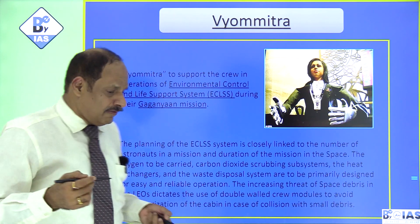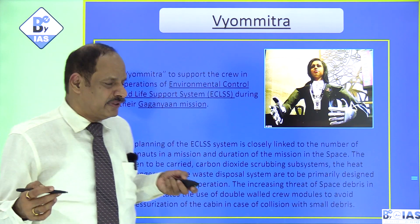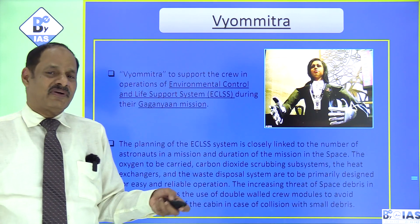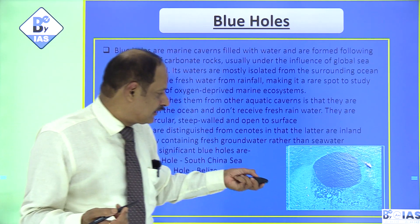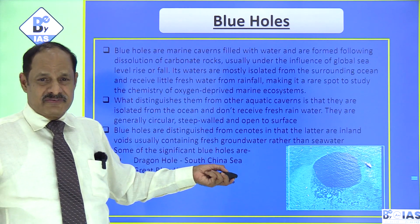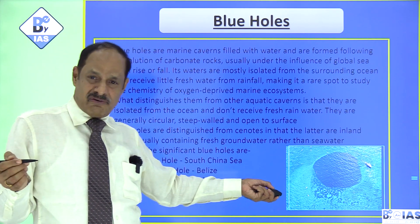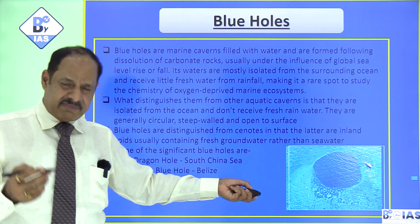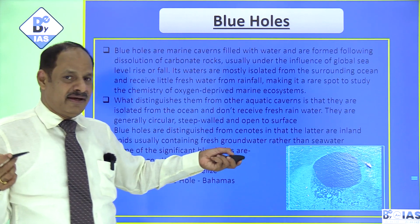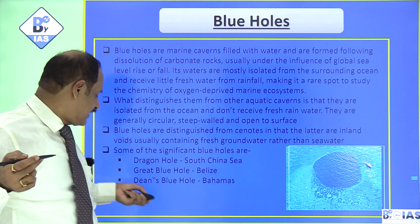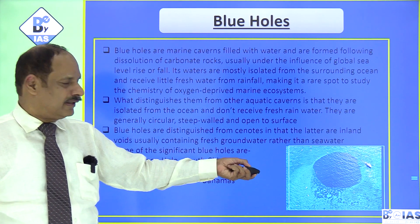Biomitra is related to the Gaganyaan mission — it will help analyze environmental issues related to that mission. Blue holes are cavern-like structures formed in marine areas filled with water, due to the dissolution of carbonate solutions. The most famous is the Dragon Hole in the South China Sea, but also remember the Great Blue Hole in Belize and Dean's Blue Hole in the Bahamas. This has been in the news and is another important topic.